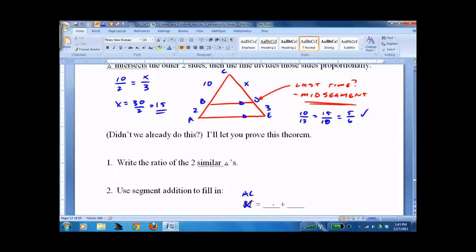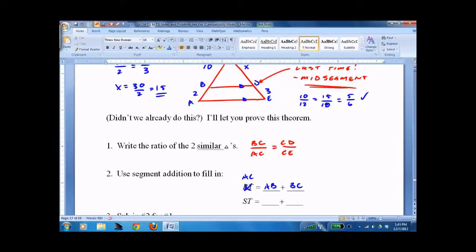So AC equals AB plus BC. And the ratio of the two similar triangles would be BC over AC equals CD over CE. And then we have to do the other side. We're calling it AE.